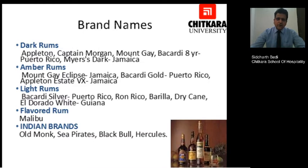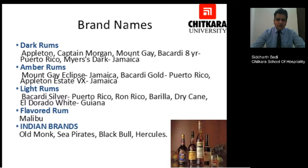Talking about famous brand names for rums: in the dark rums category we have Appleton, Captain Morgan, Mount Gay, Bacardi 8 Years made in Puerto Rico, and Myers Dark made in Jamaica. Then in amber or golden rums we have Mount Gay Eclipse, again made in Jamaica, Bacardi Gold, and Appleton Estate which is also made in Jamaica. In light rums we have Bacardi Silver, Ron Rico, Verilla, Dry Cane, and El Dorado White.